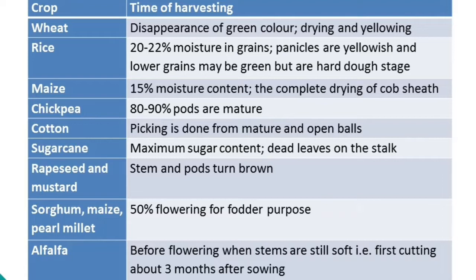In alfalfa, the crop is harvested before flowering when stems are still soft — that is, the first cutting about 3 months after sowing.